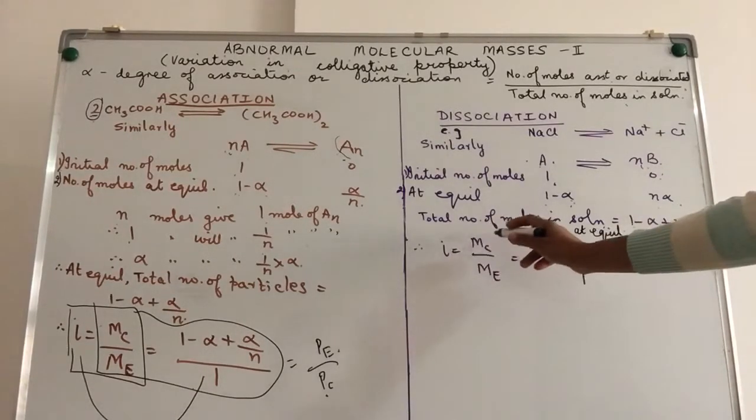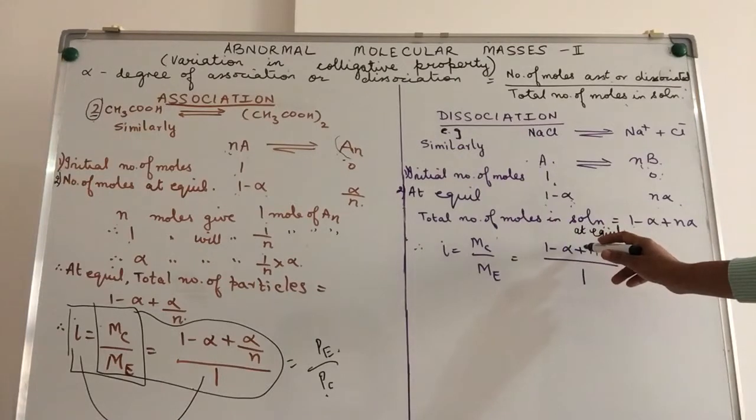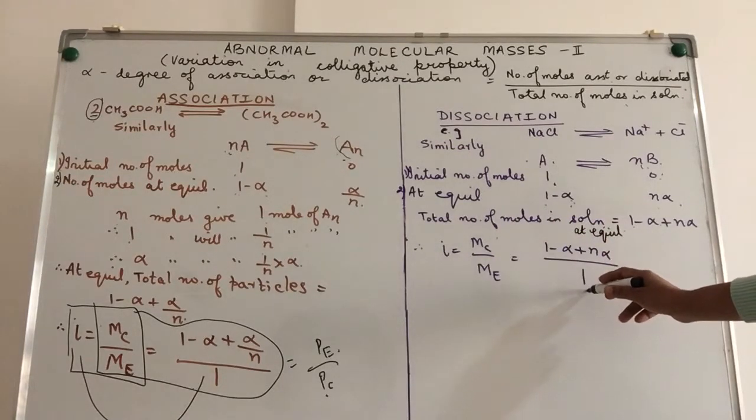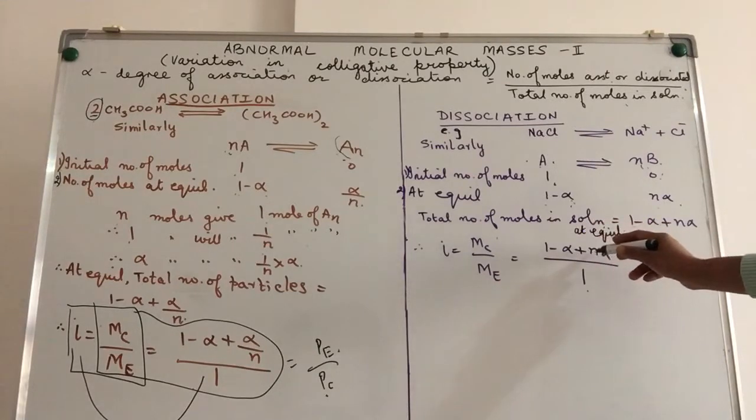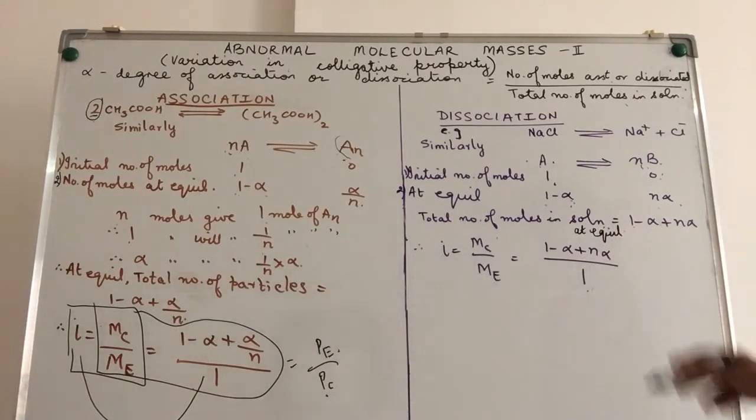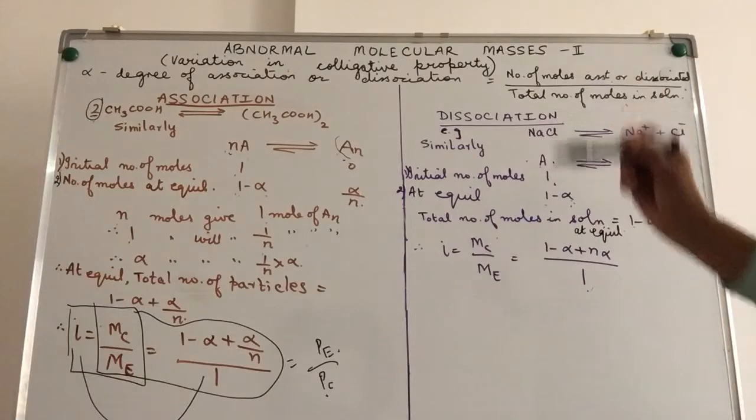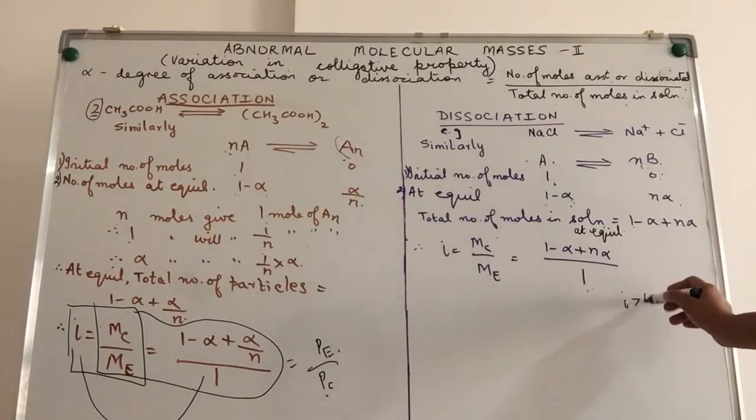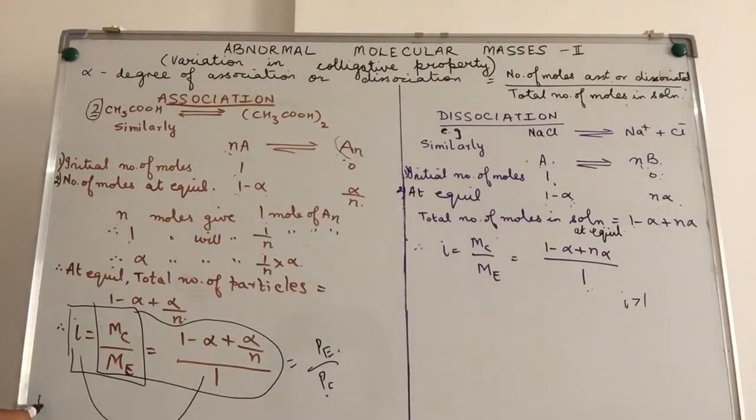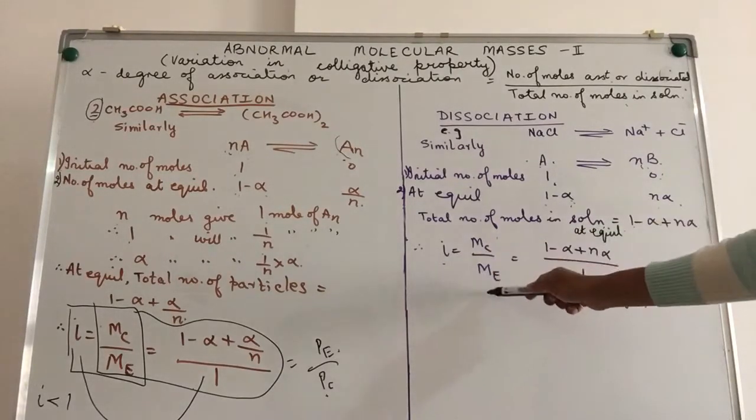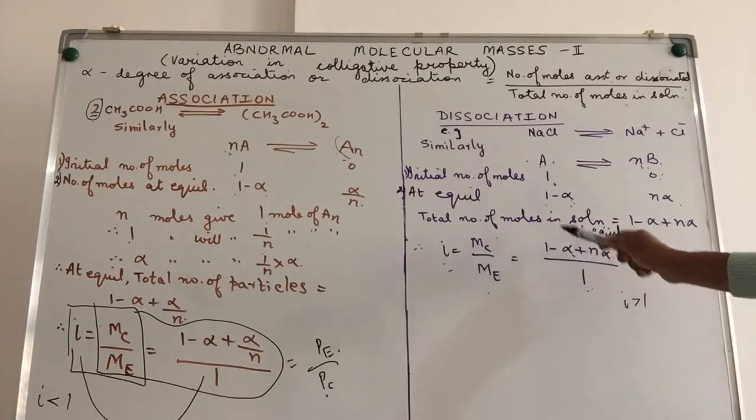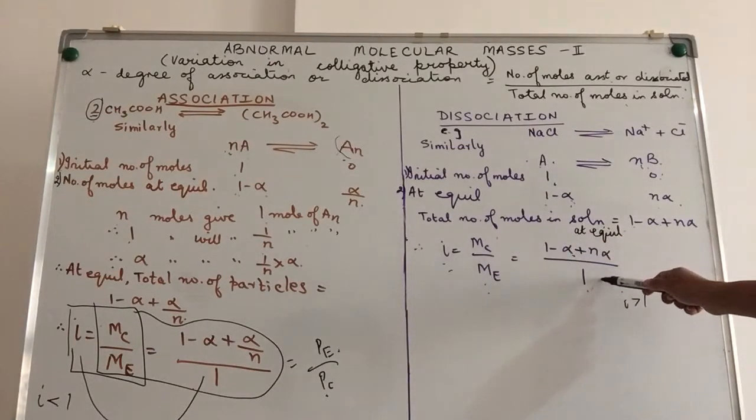Iota again, MC divided by ME, that is experimental colligative property divided by the calculated, or the actual number of particles divided by the number of particles originally taken. So, i is equal to MC upon ME. Notice over here, association, iota becomes less than 1. Dissociation, iota becomes greater than 1. Again, for dissociation, we have three formulas correlating iota to molar mass, iota to degree of dissociation, and masses to the degree of dissociation.